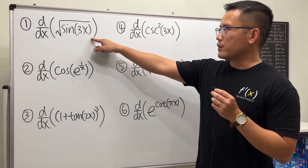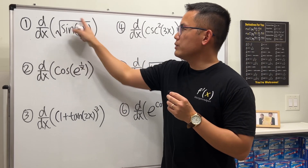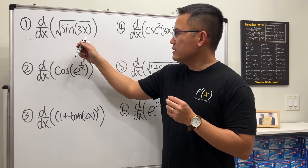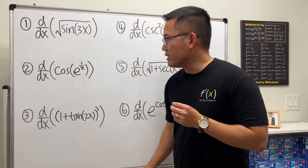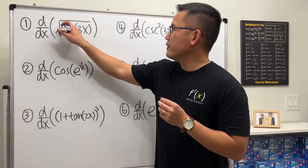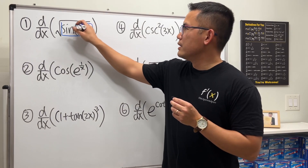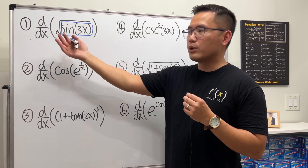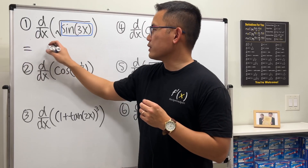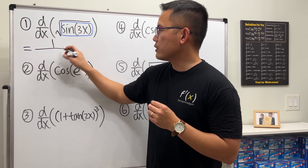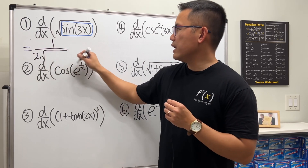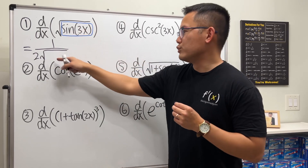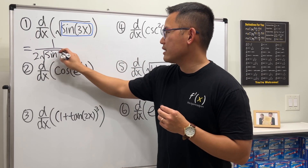Let's get started with the first one: differentiating the square root of sine of 3x. As you can see, first off we have this box here — square root of this. The first step is to differentiate the square root, which is the outer function. The derivative of square root is 1 over 2 square root, and then you put a box in there. You write down the function, which is sine of 3x.